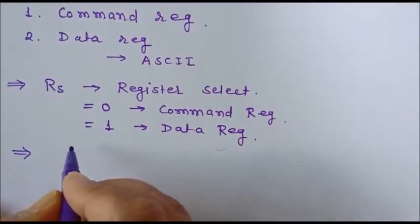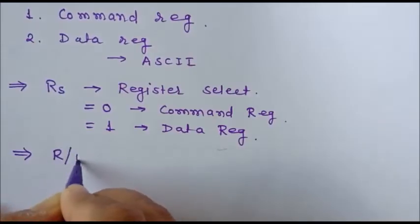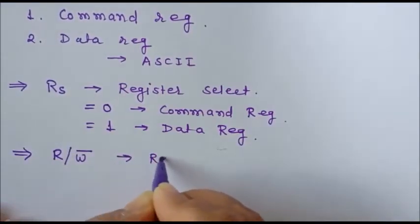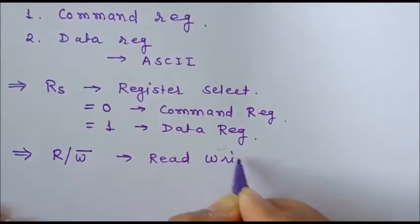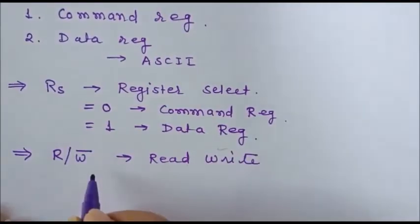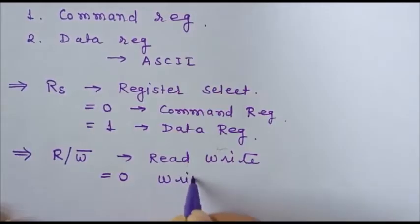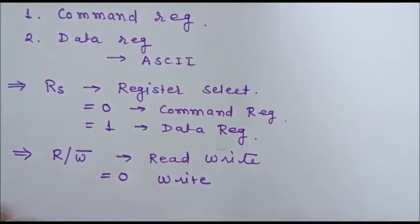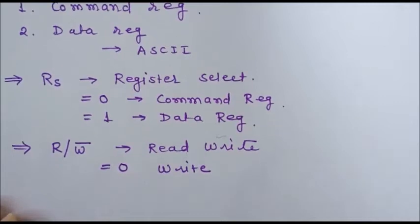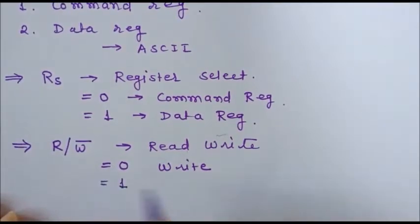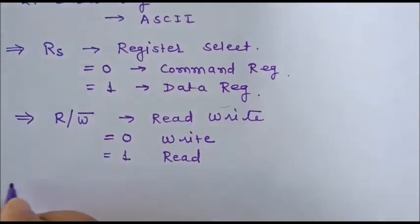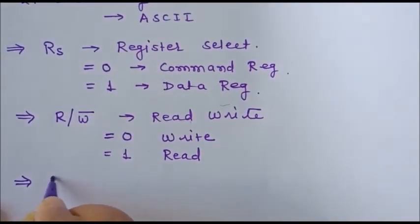The second control signal is R/W bar, the read/write signal. Generally we perform write operations. When this terminal is at logic 0, a write operation is performed — meaning we can write a command or data into the command or data register. When it is logic 1, we can read data or signals from the LCD.